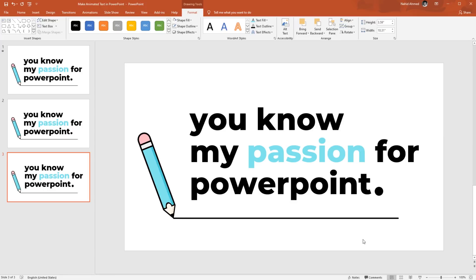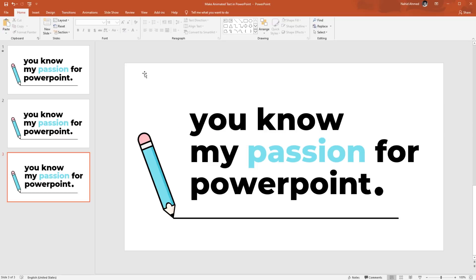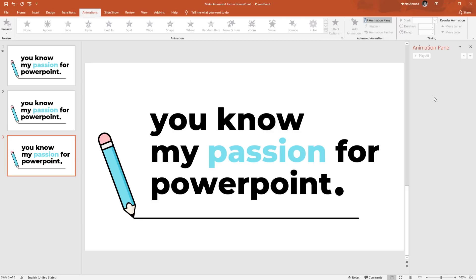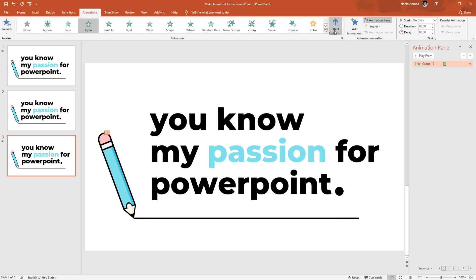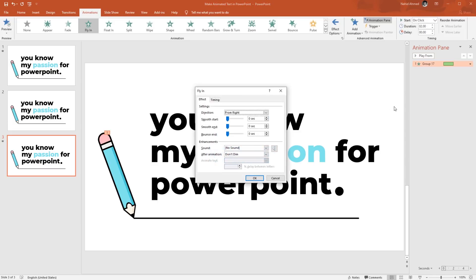We are done creating all the necessary elements. Now we have to add the animation to make our work look like the preview. Go to the Animation tab and click on Animation Pane — from here we can view our animation status. To add the first animation, select the pencil group. From Add Animation, select Fly In. From Effect Options, select From Right. Keep this On Click, set the duration to 2 seconds. Click on the drop-down arrow, go to Effect Options, increase the Smooth End, then press OK.